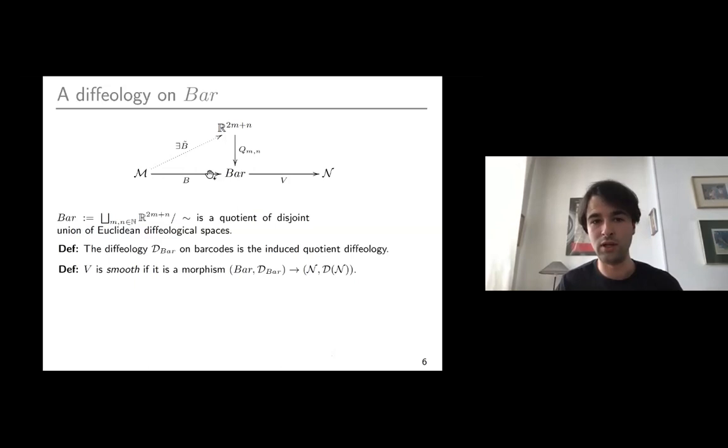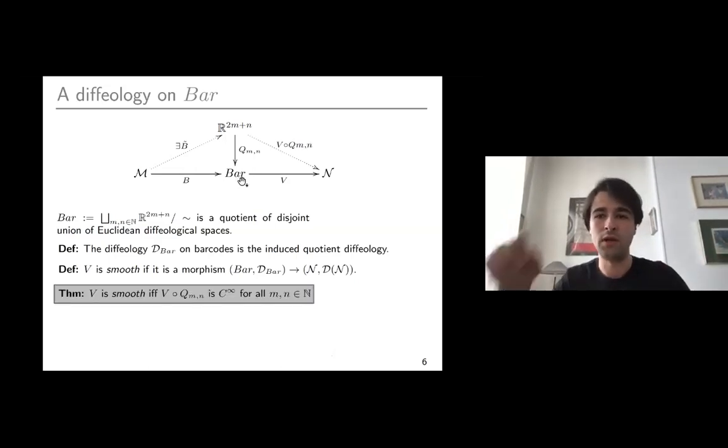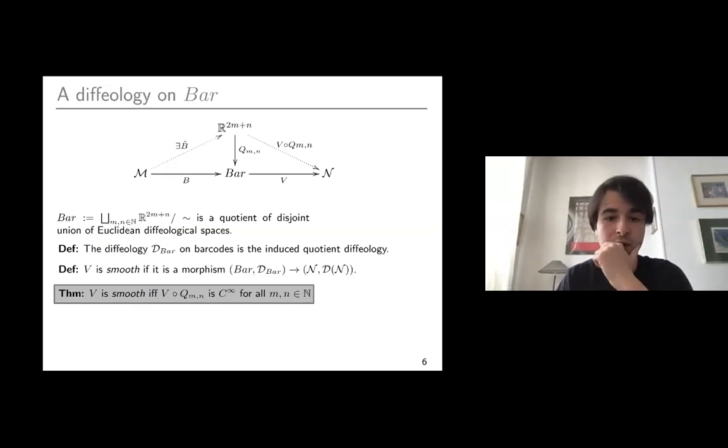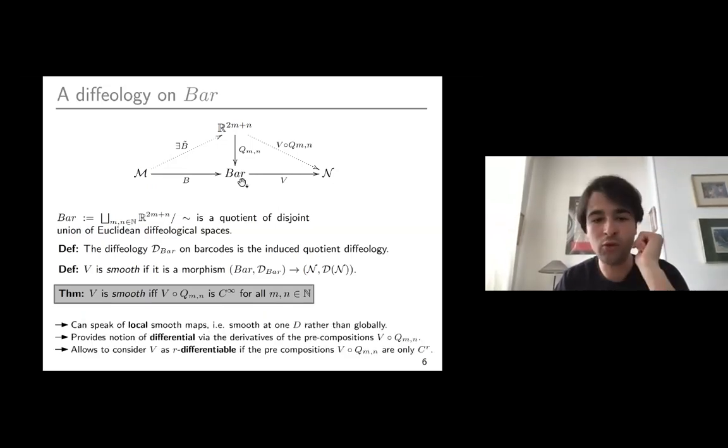Dually, if we have a map out of barcodes, this map V, it is smooth if by definition it's an arrow in the category. Again, there is a characterization. These dotted arrows are smooth in the usual sense for all possible spaces of ordered barcodes. This is just saying for any smooth perturbation of the barcode, allowing points coming out of the diagonal or merging to the diagonal, the reaction of the image should be smooth as well.